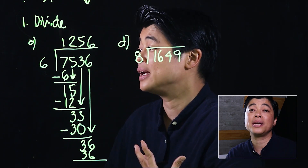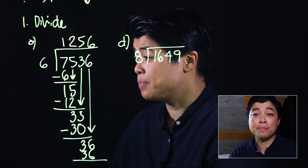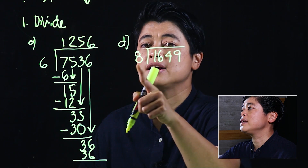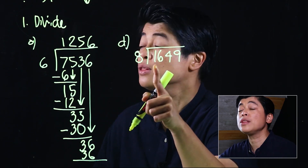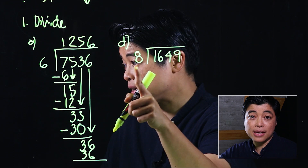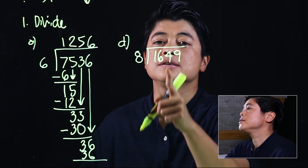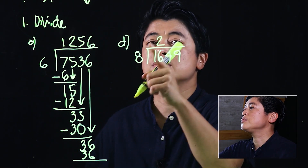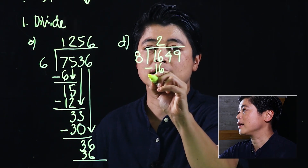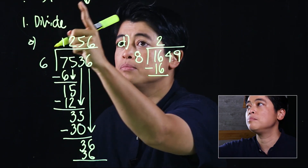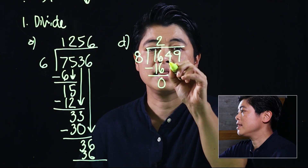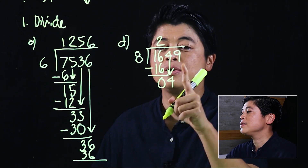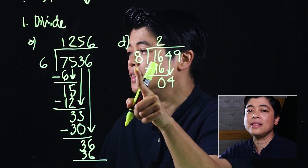For letter D, we start with 1 and divide by 8 — it cannot go, so we move to 16. 16 divided by 8 is 2. Two times 8 is 16, then we subtract. So again: divide, multiply, subtract, then bring down.